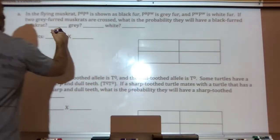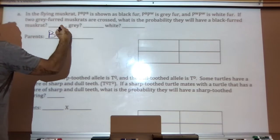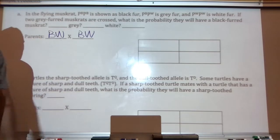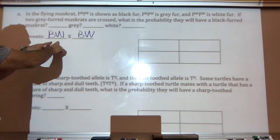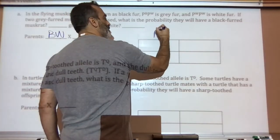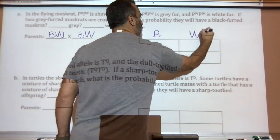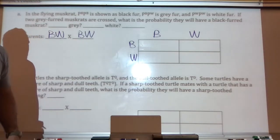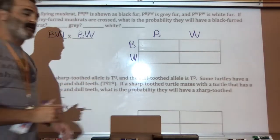I'm only going to use the uppercase B's and the uppercase W's when I work these out. Both of the parents are gray. So gray means you have a black and a white gene, a B and a W. So this is one parent. There's the other parent. Both of the parents, two gray furred muskrats mate. You split them apart. B, W, B, W. The top ones come down. The side comes over.